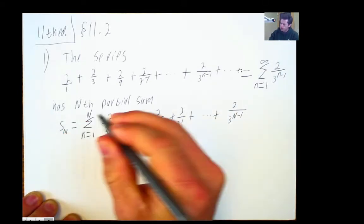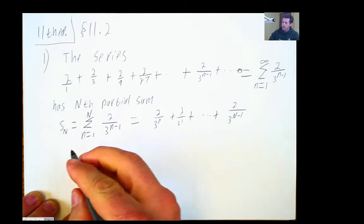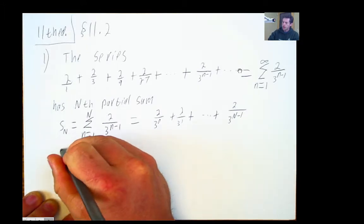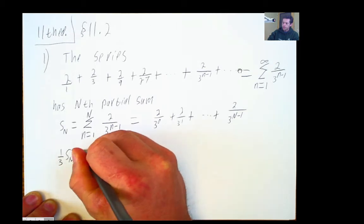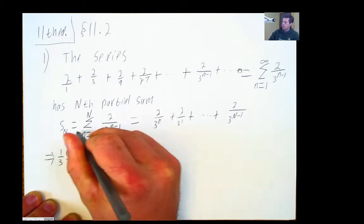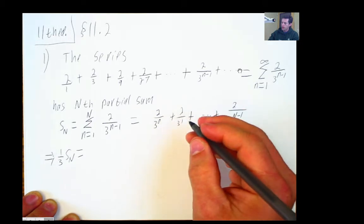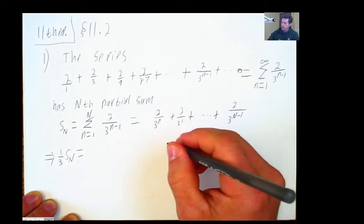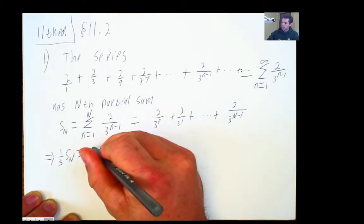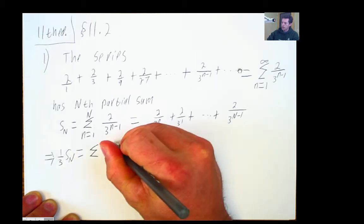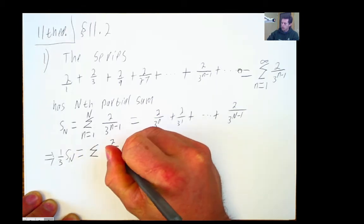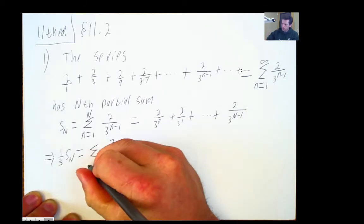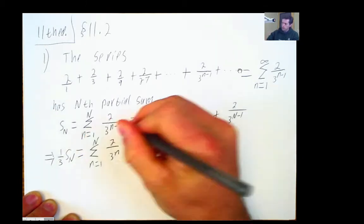And then if you multiply that nth partial sum by 1/3... All right, the first line here implies that if I multiply that by 1/3, that I get... Oh, just to make things line up, I'll put in this.